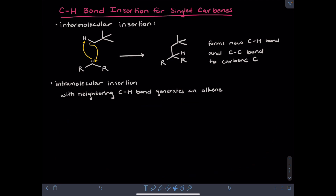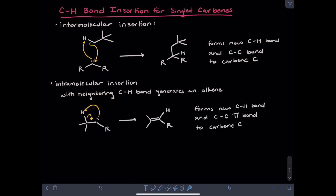Singlet carbenes can also undergo intramolecular CH bond insertion reactions. One particular example involves a CH bond on a neighboring carbon. In this curved arrow mechanism, I would take the lone pair from the carbene to the proton, and in the case where you have a neighboring CH bond, you would take the electrons from the CH bond and bring them down to form a pi bond. The first curved arrow shows formation of the new carbon-hydrogen bond to the carbene carbon, and the second shows pi bond formation between the carbene and the neighboring carbon that lost its hydrogen.